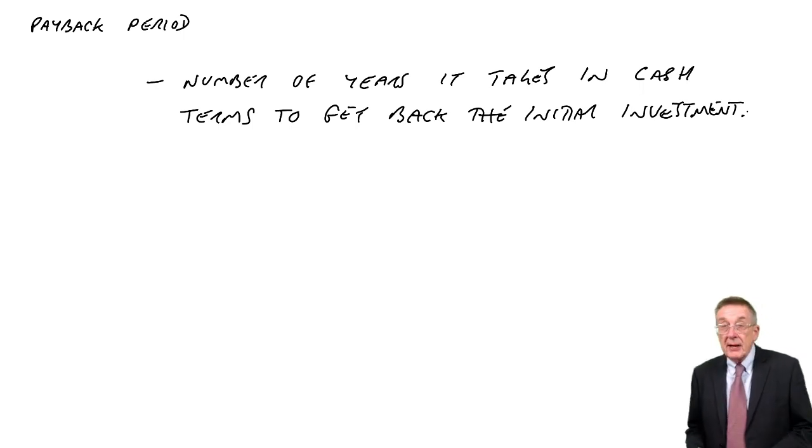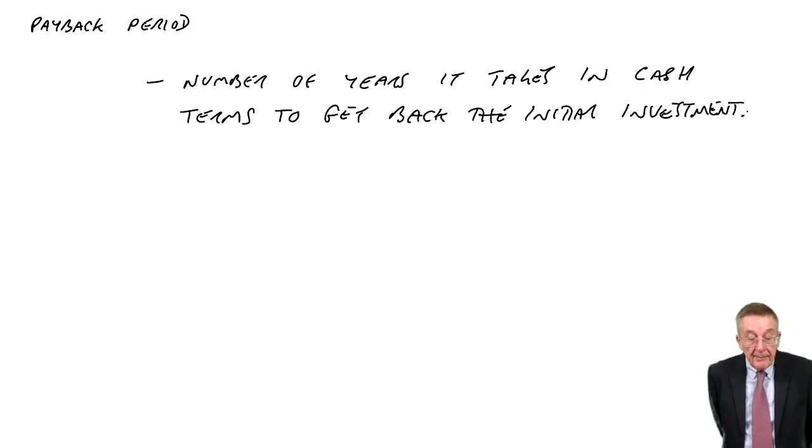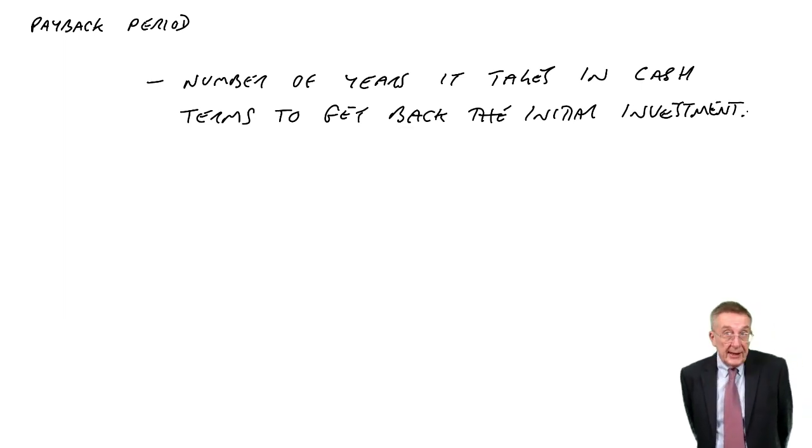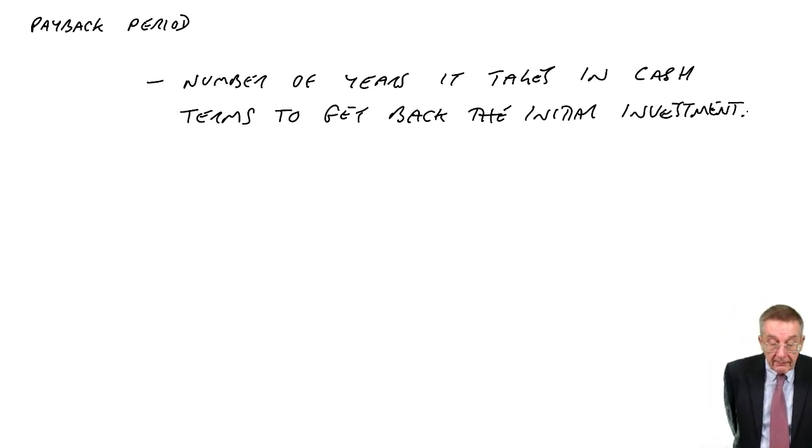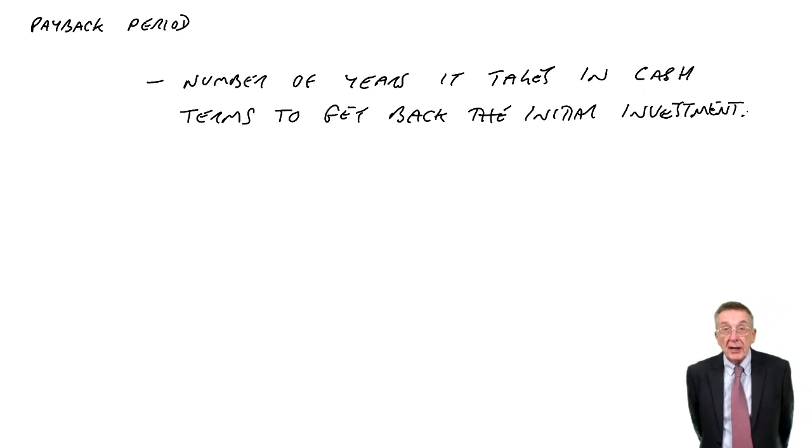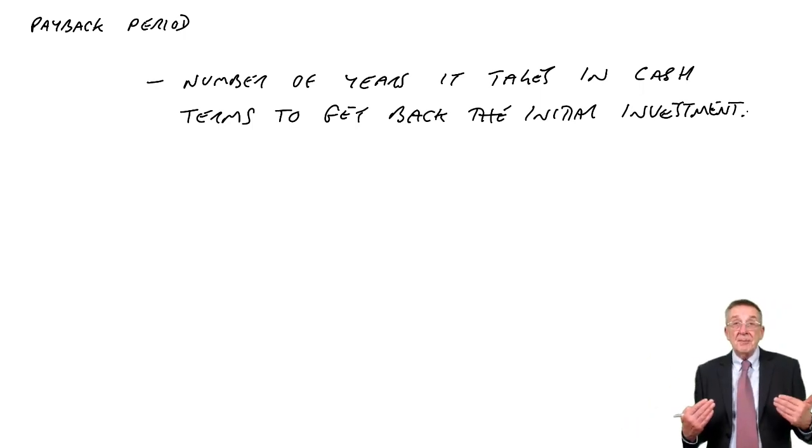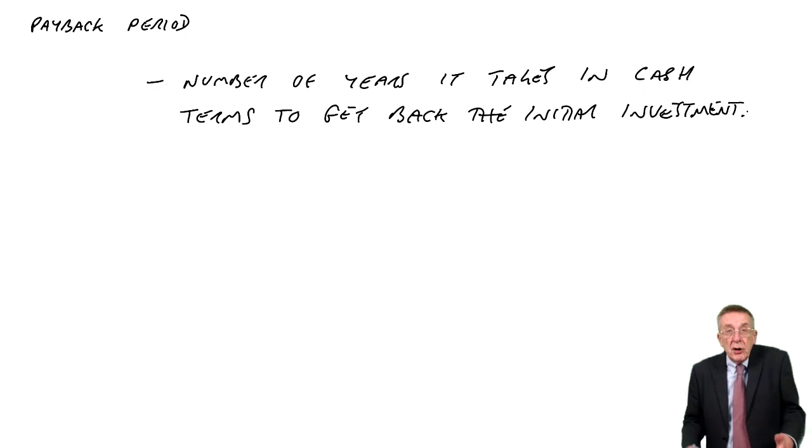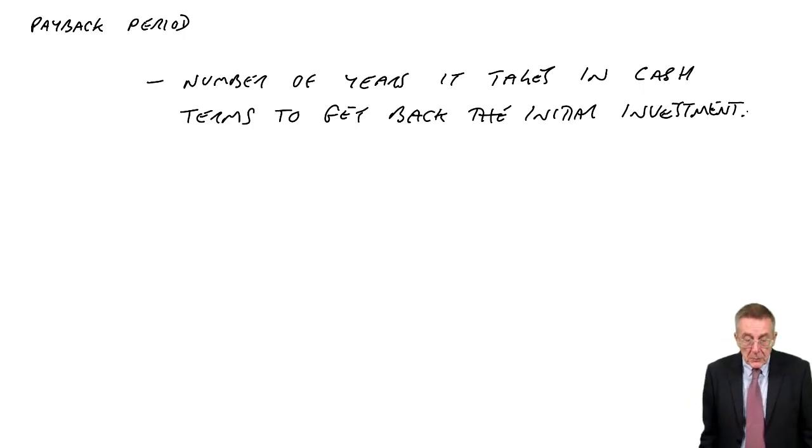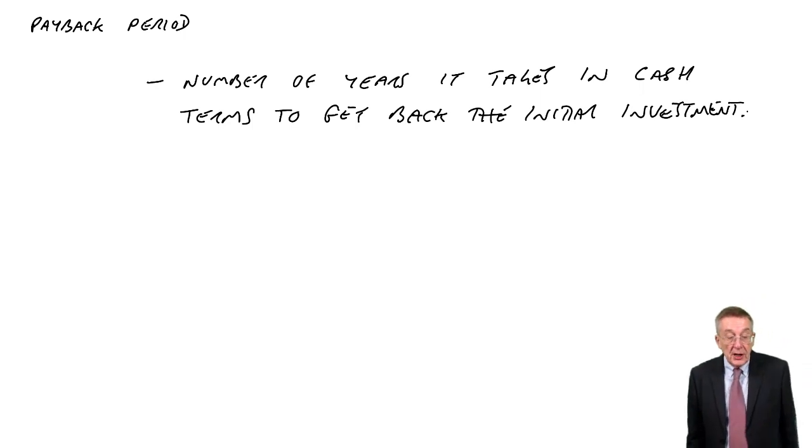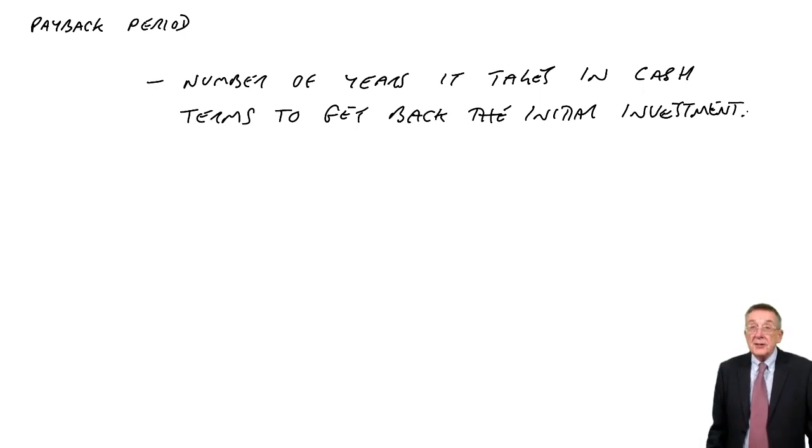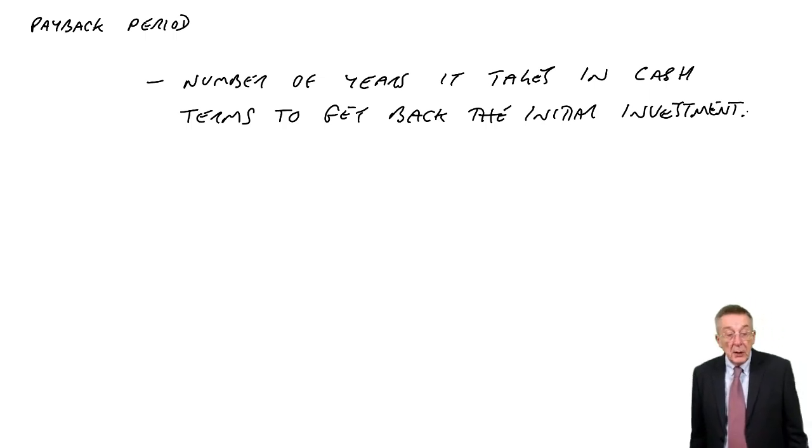Look at example three. A new project will cost us £100,000. It's going to last five years with no scrap value. We expect it to generate operating cash flows as follows. The operating cash flows are your cash receipts, the sales, less all the cash expenses. It's like the profit each year but in cash terms. We expect to get £20,000 in the first year, £30,000 in the second, £40,000 in the third, and so on. I want to know how many years will it take to get back that £100,000 we've spent.